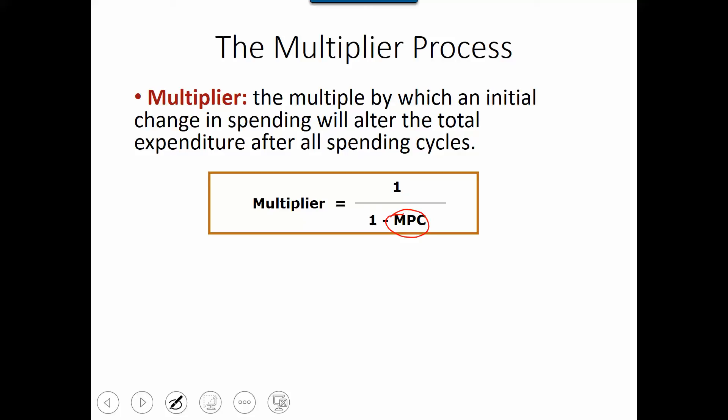That means if your disposable income is $100, you're supposed to spend MPC times disposable income amount of money on consumption. So for instance, if the marginal propensity to consumption is 75%, the multiplier will be equal to 1 divided by 1 minus 75% and you will end up 4 as your multiplier.